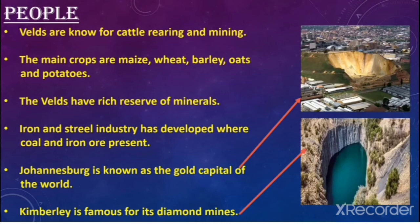People and their occupation in velds: the main crops are maize, wheat, barley, oats, and potatoes. The velds have rich reserves of minerals. Iron and steel industry has developed where coal and iron ore are present. Johannesburg city is known as the gold capital of the world, and Kimberley city is famous for its diamond mines.